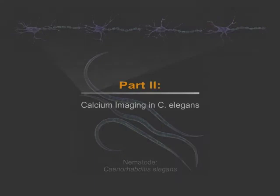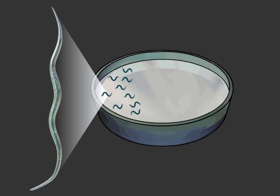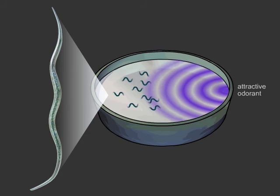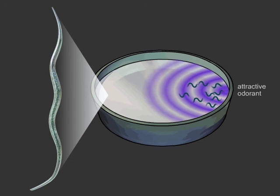Calcium signaling plays an essential role in neuronal signal transduction. In C. elegans, calcium signaling is crucial for chemosensation. Previous research has shown that these microscopic animals can detect and move toward attractive odorants and away from repulsive odorants. When a worm is exposed to odorants, we can observe synaptic inputs and neuronal firing by measuring the relative changes in calcium levels in each neuron.